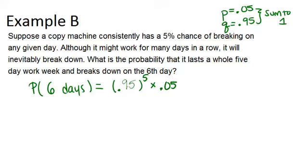So we have five days in a row where the probability of it being fine is 0.95. And then on the sixth day, it breaks down. When we multiply all this out, we get our answer, which is 0.039. So that means that the probability of it breaking down on the sixth day for the first time is 3.9%.